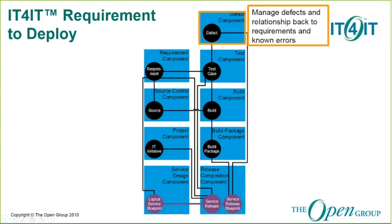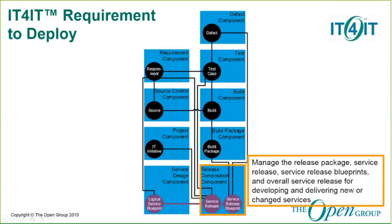Defect component. Keep track of all the defects, including their origin, status, importance, and relation to requirements and known errors. The release composition component keeps track of the different service releases. It defines the structure and content of the service release and its underlying components, including the instructions of how each component can be deployed.